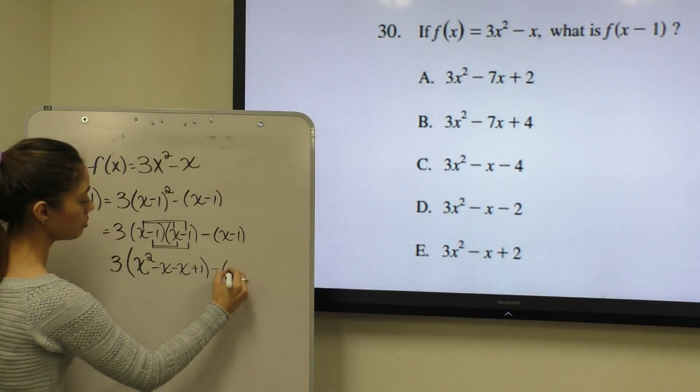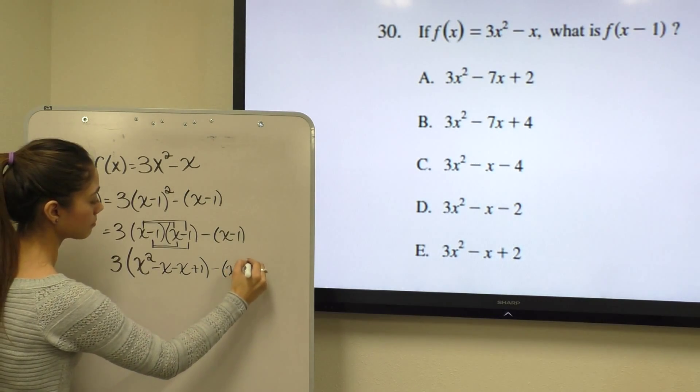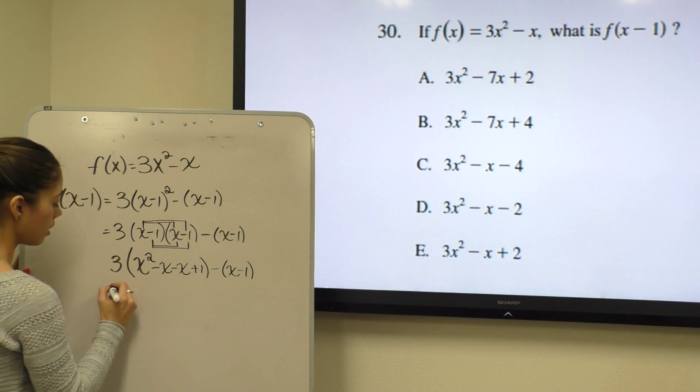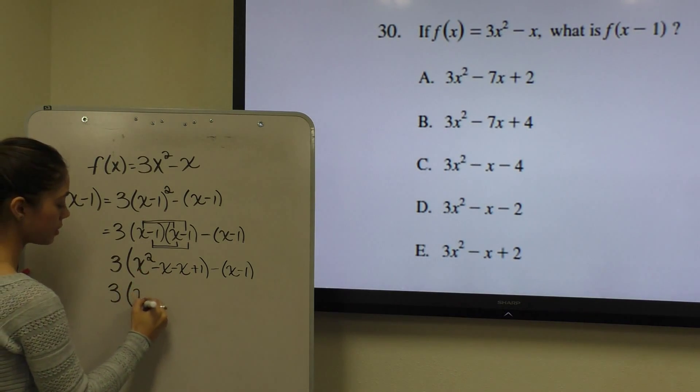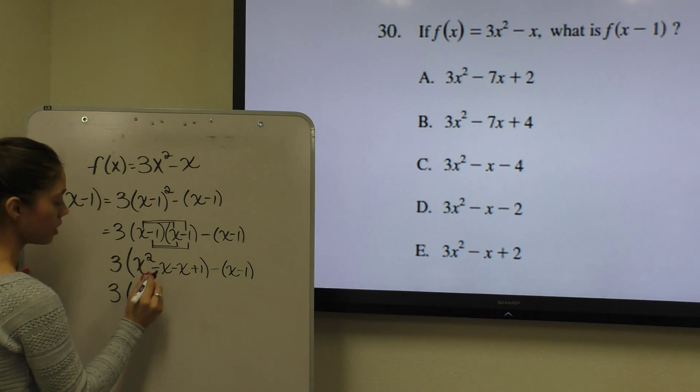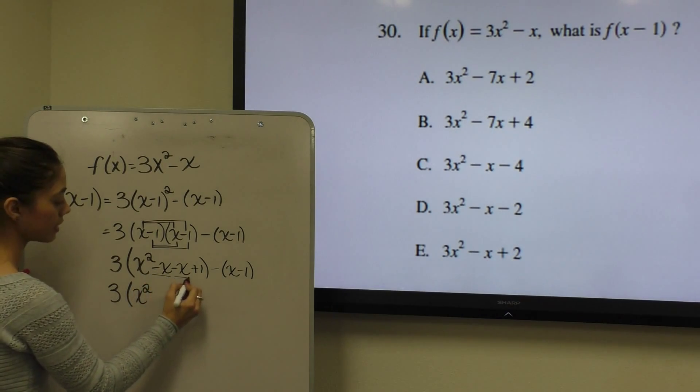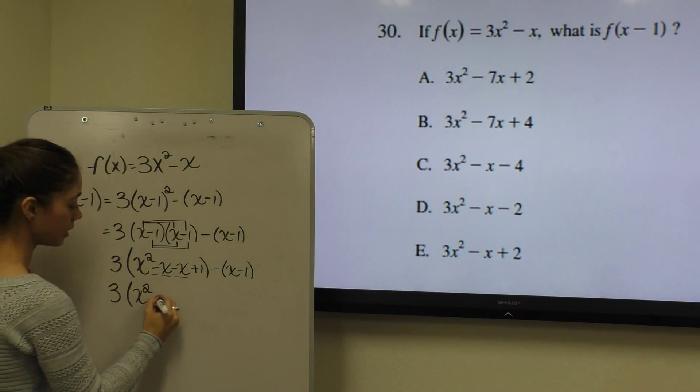And then I continue to bring my x minus 1. And then I rewrite my 3 and I combine like terms. So in this case, x squared is the only square we have. However, we have negative x and negative x that can be combined into negative 2x plus 1.